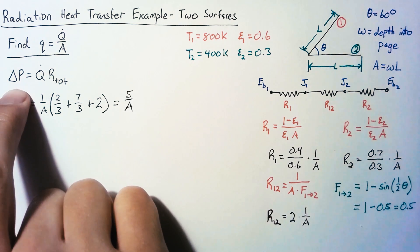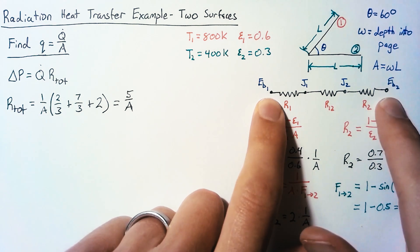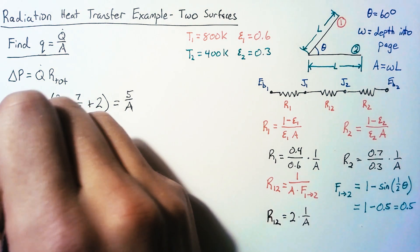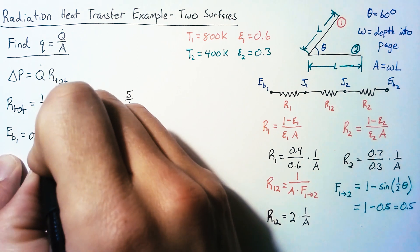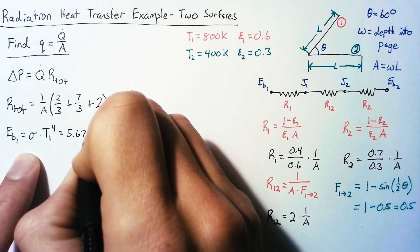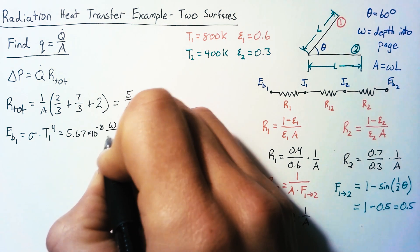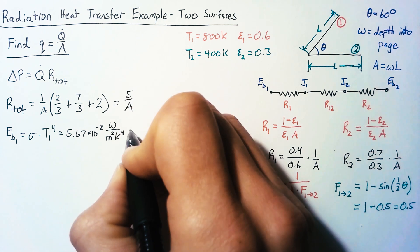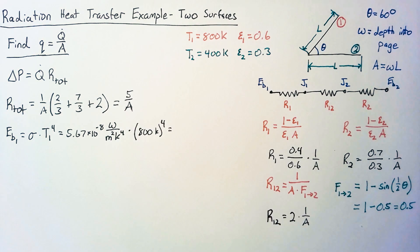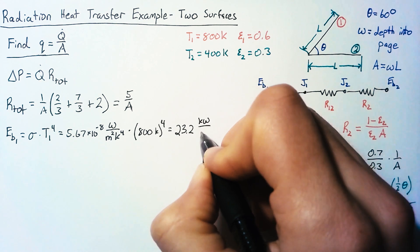So next, we need to find this delta P, the change in potential. And the change in potential is just going to be the difference in these EB terms. Our blackbody radiation from surface 1 is going to be sigma multiplied by T1 to the fourth. This sigma is 5.67 times 10 to the negative 8. And that has units of watts per meter squared Kelvin to the fourth. And that'll be multiplied by 800 Kelvin to the fourth. So plugging that in, we end up with 23.2 kilowatts per meters squared.